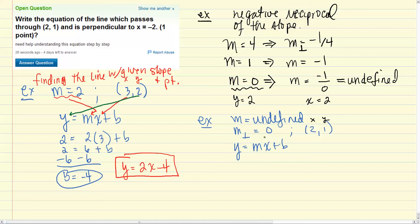the 2 and the 1, and then the m. That's going to give us 1 equals 0 times 2 plus b, and 1 equals b.